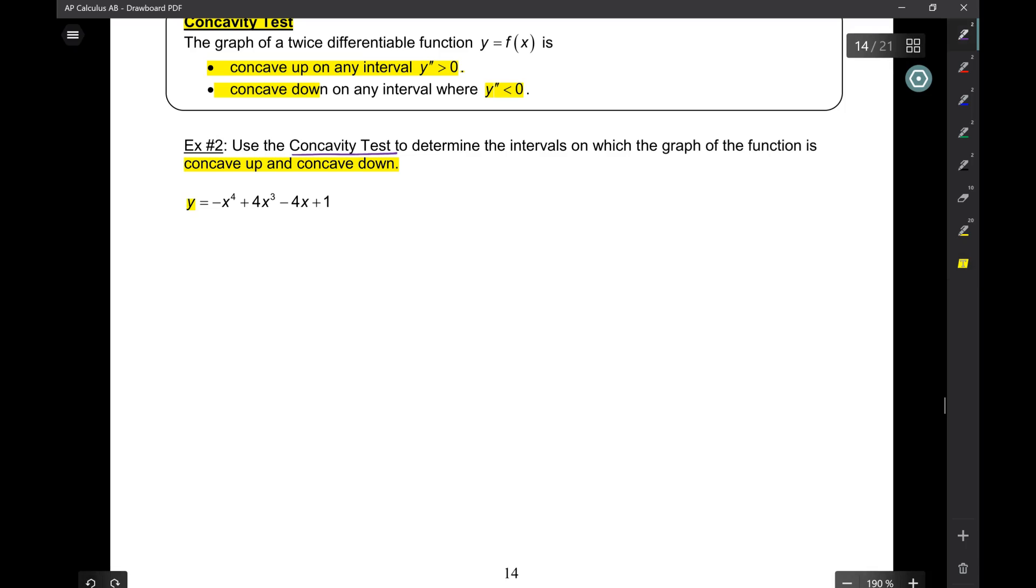y prime, negative 4x cubed plus 12x squared minus 4. y double prime, negative 12x squared. Awesome. Now, we're going to set y double prime equal to 0. So, we're going to say 0 equals negative 12x times x minus 2. From here, we get x equals 0 and x equals 2.